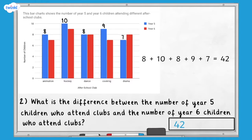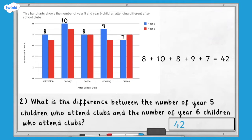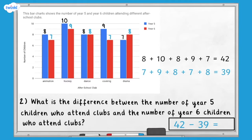Now we need to know how many year six children attend clubs. Pause here and work out the number of year six children who attend each club and then add them together to find the total. Did you work out that 39 year six children attend clubs? Finally, we need to calculate the difference between the number of year six children who attend clubs and the number of year five children who attend clubs. We can do this by subtracting the smaller number from the greater number. Forty-two subtract 39 equals three. So the answer to question two is three.